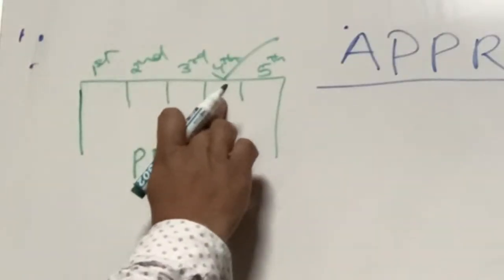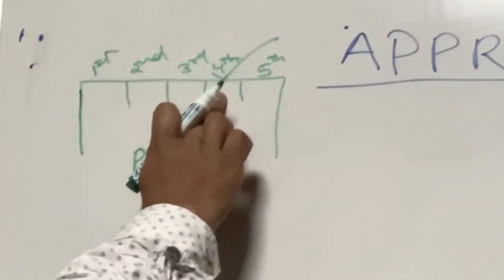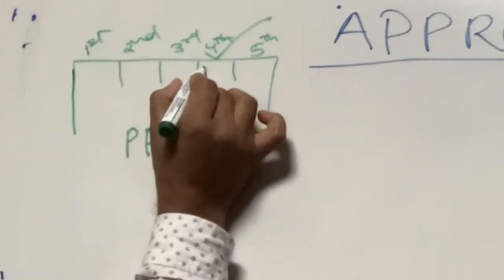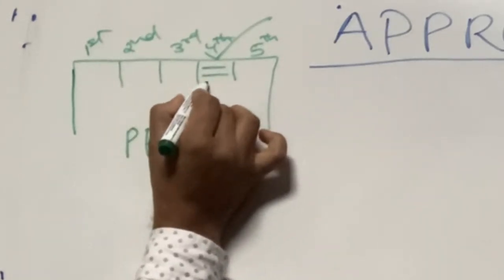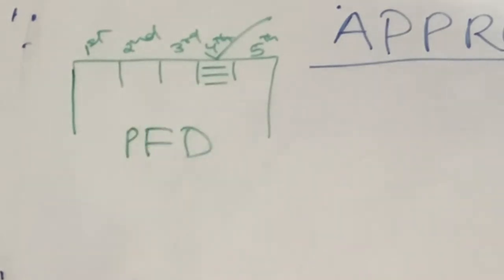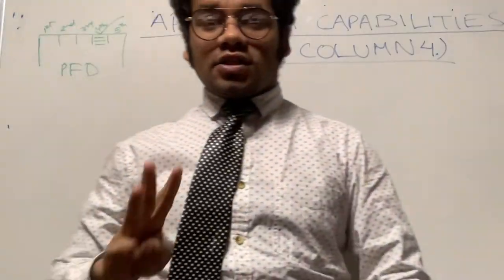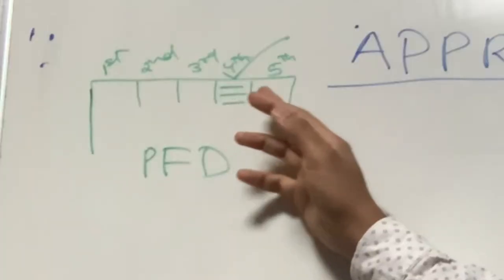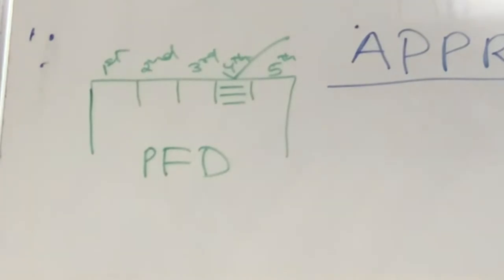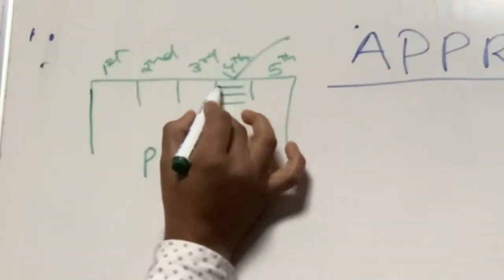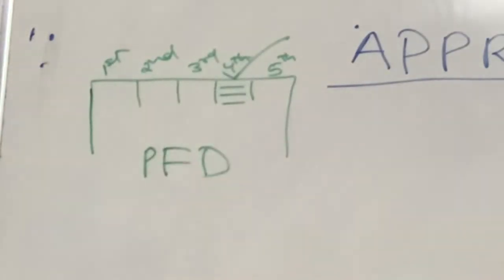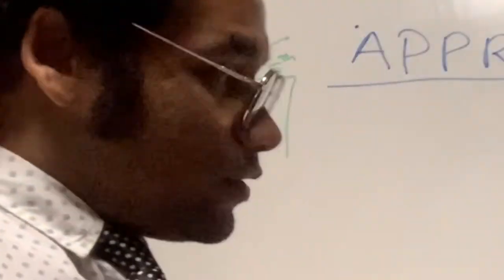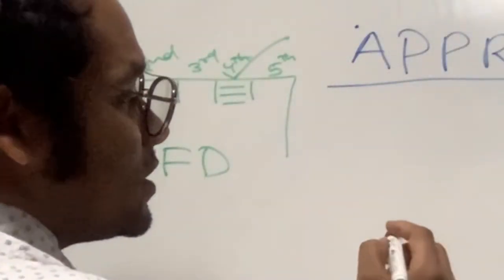So let's start about the fourth column. In the fourth column, as discussed, there are three lines: first line, second line, and third line. We will learn what appears in these three lines. If I talk about the first line, what FMA will appear?